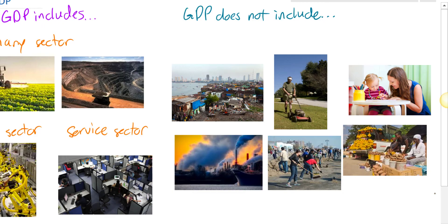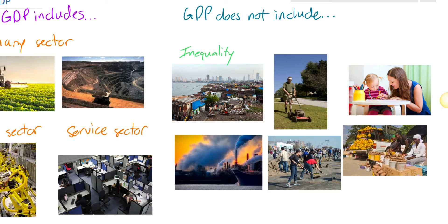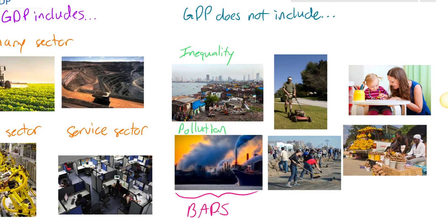GDP does not include the negatives that sometimes result from the production of goods and services — what we could call economic bads. Things like inequality. This first image represents income inequality: a very destitute slum surrounded by modern high-rise buildings where people with high-paying jobs work in nice offices. The degree of income inequality resulting from production is simply not included in GDP. When we say a country's GDP is growing, that doesn't mean everybody is richer — it could mean a very small number of people at the top are getting richer while everybody else's income stays the same.